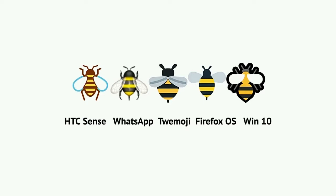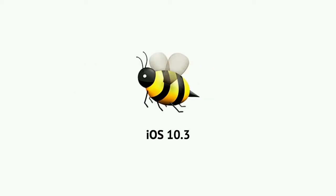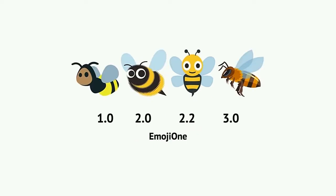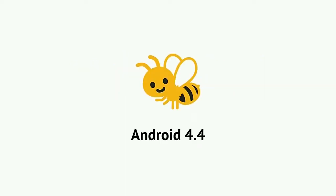Then it gets a bit confusing. You've got the iOS bee — standard bee, bit of a cartoon, 7 out of 10. Then you've got this bee, which is just cute as heck. This is from Emoji One, which is a Kickstarted, open-source, open-licence emoji set. But they keep updating their bee, so depending on which version you have, you have a different bee. I like 2.0 — it's kind of fuzzy.